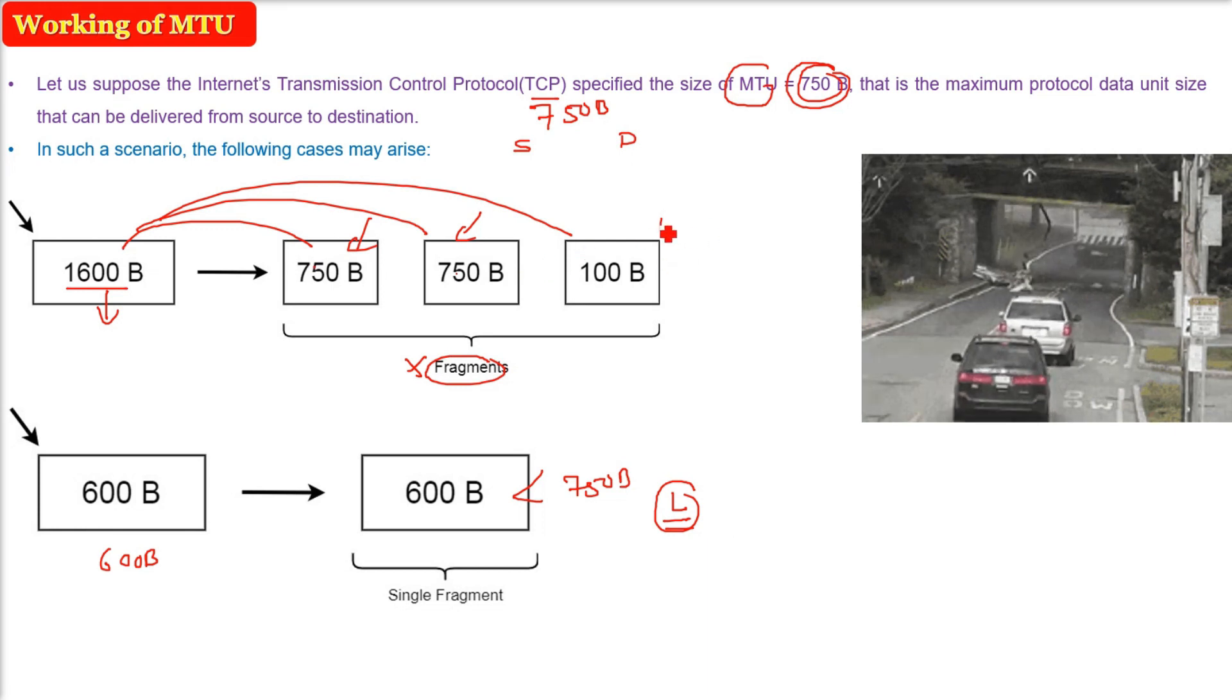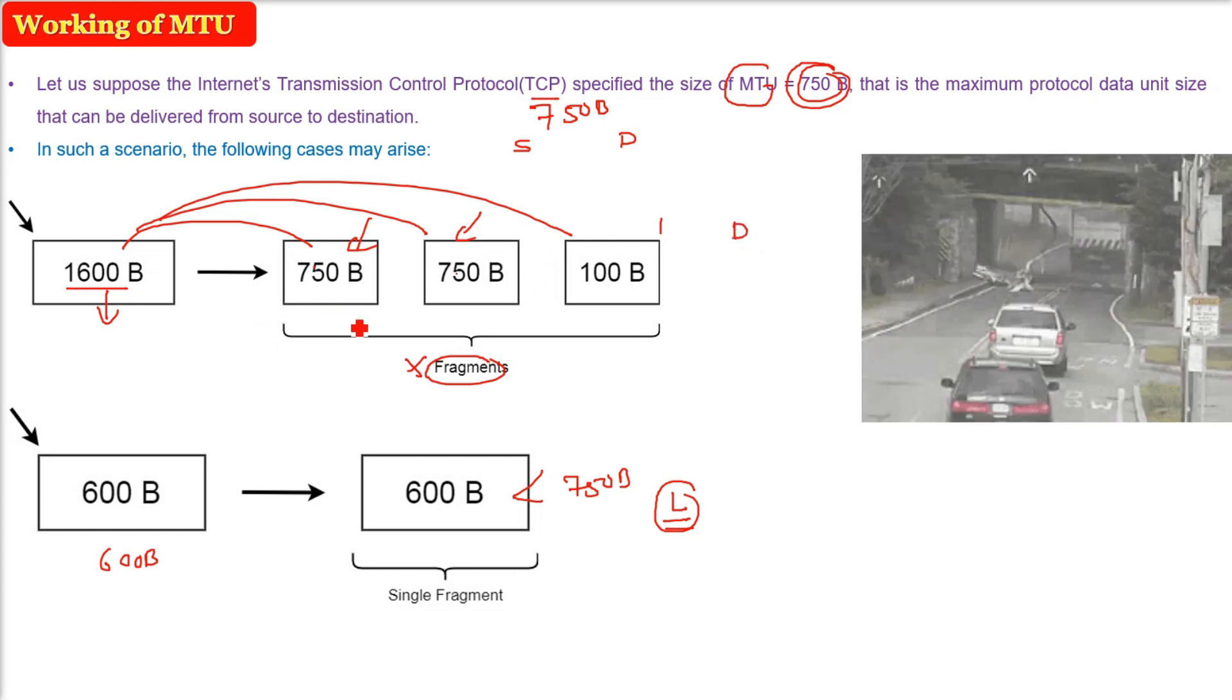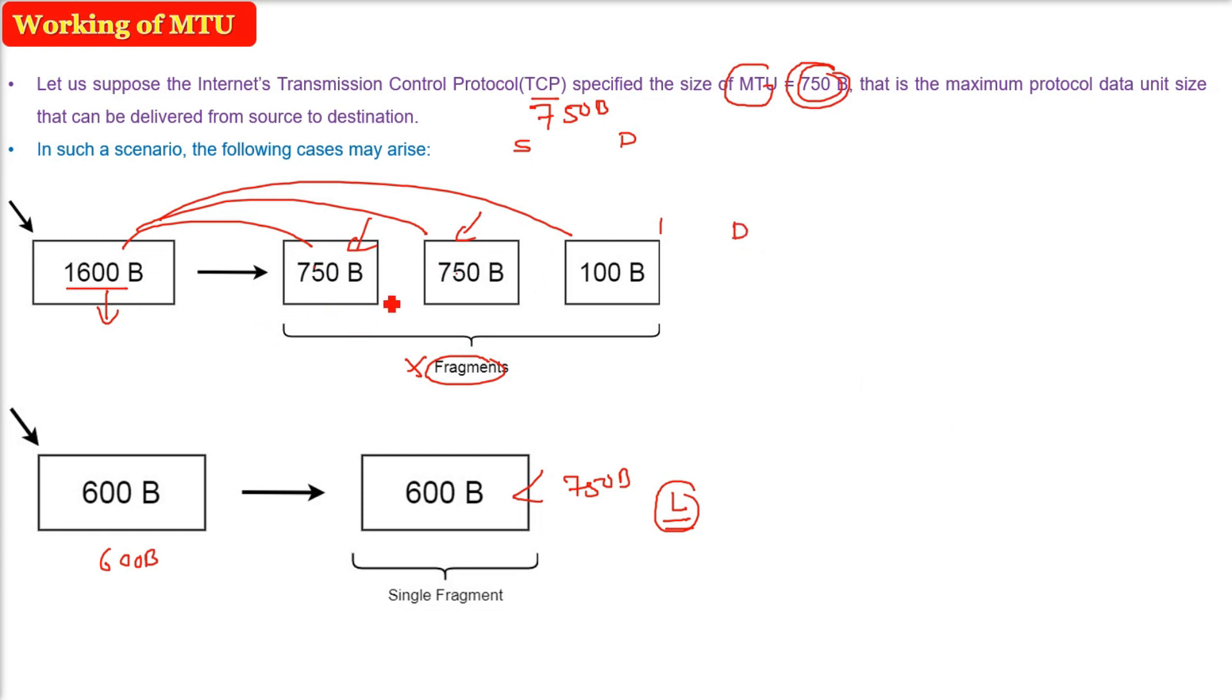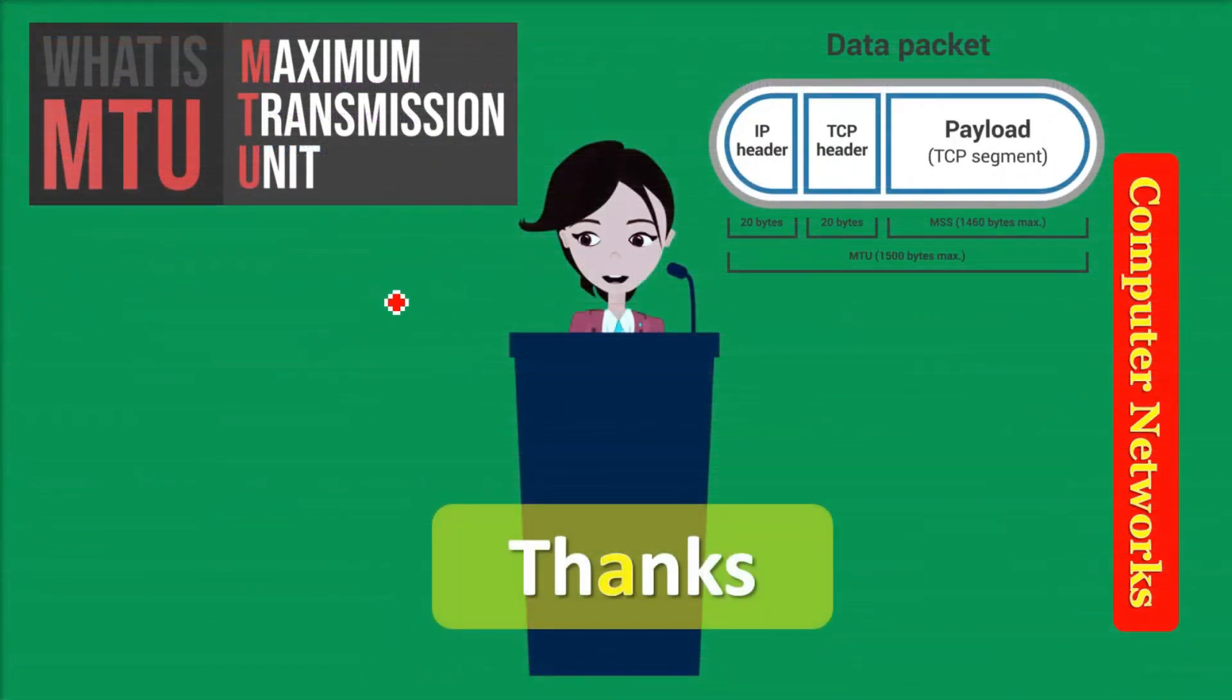In this case, 600 bytes is not required, and in the first part, 1600 bytes, there will be a problem. First, you have to fragment it, then you have to send them, and then you have to organize them at the destination. So I hope you have a fair idea about MTU now. Thank you so much. Take care of yourself.